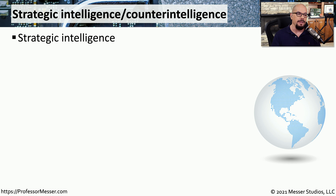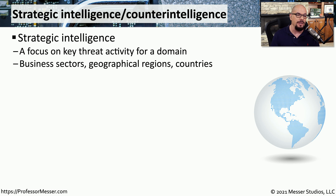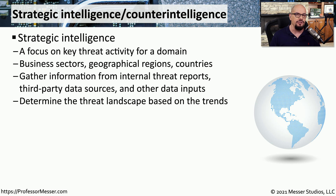Gathering evidence can also be done using strategic intelligence. This is when we focus on a domain and gather threat information about it. We might look at business information, geographic information, or details about a specific country. We might get much of this from threat reports created internally or gathered from a third party. There might also be other data sources, especially with open source intelligence or OSINT, that could provide additional details. And if we're looking at information over an extended period of time, we may be able to track certain trends that give us more information about the threat.